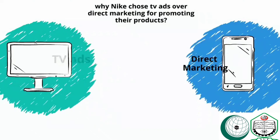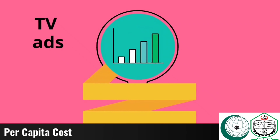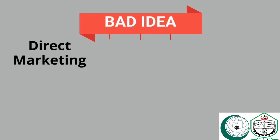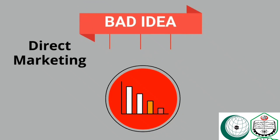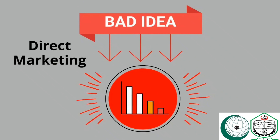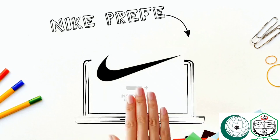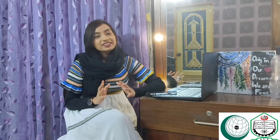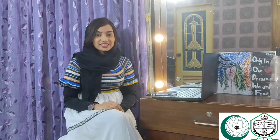But if the common message is conveyed by too many media, it will increase the cost. Cost is the last element of IMC that reflects the efficiency of any media plan. Did you wonder why Nike chose TV ads over direct marketing? The answer is pretty simple and related to per capita cost. For TV ads, per capita cost is very low, which is why it is a good idea. But for direct marketing, the per capita cost is higher compared to TV ads, making it a very bad idea. This is why Nike prefers TV ads over direct marketing.